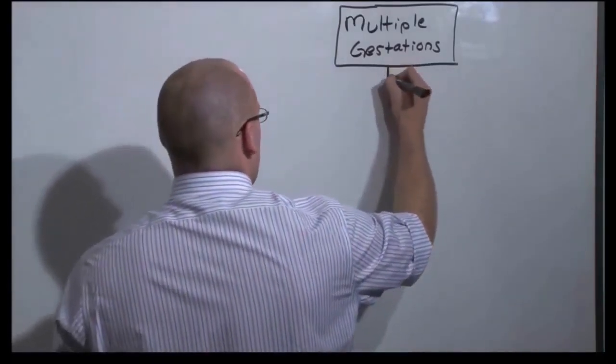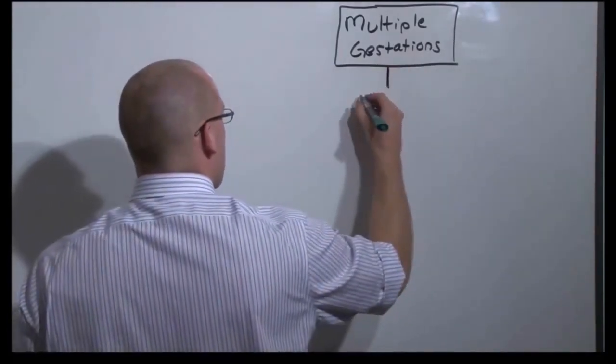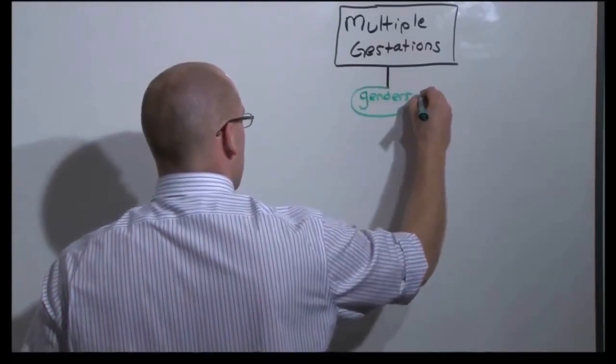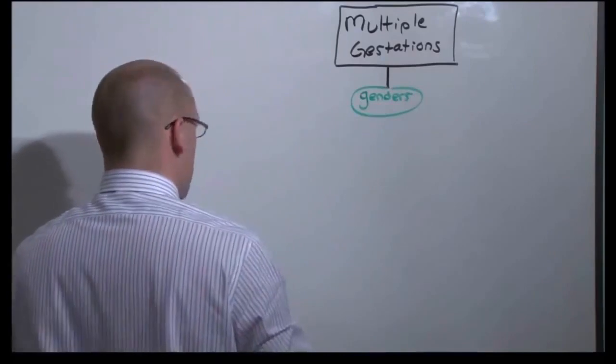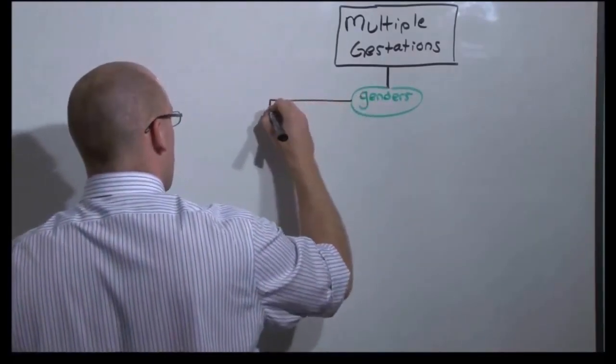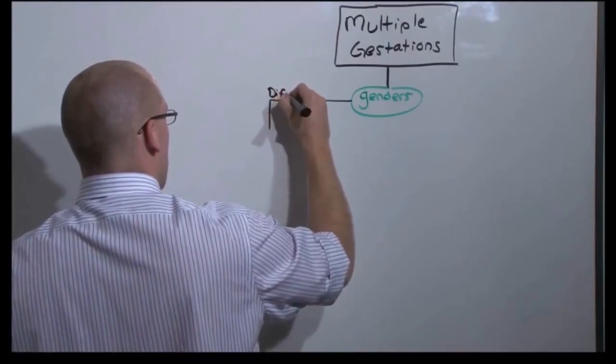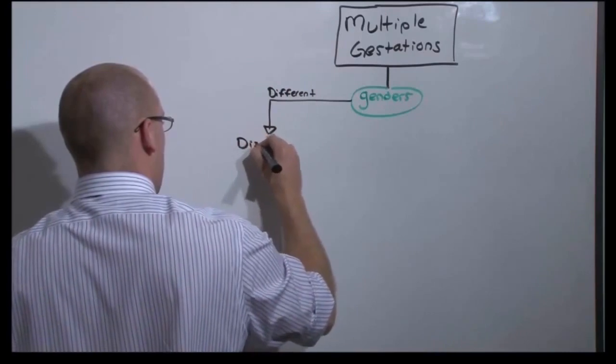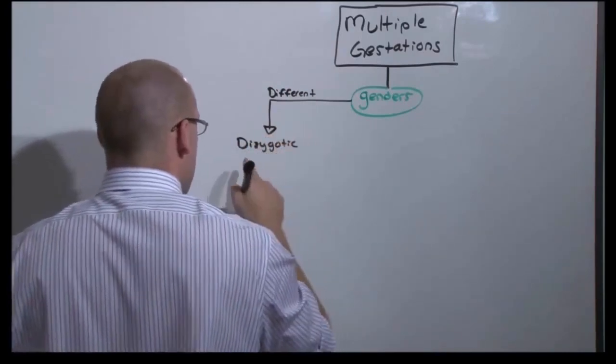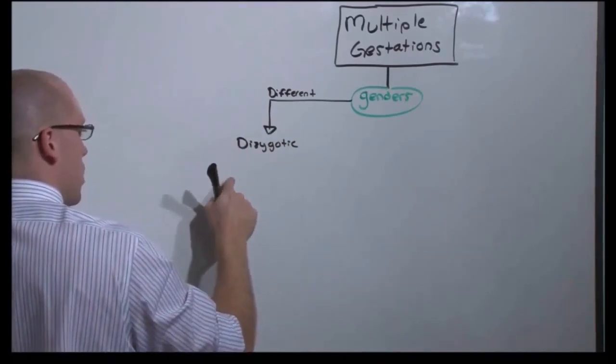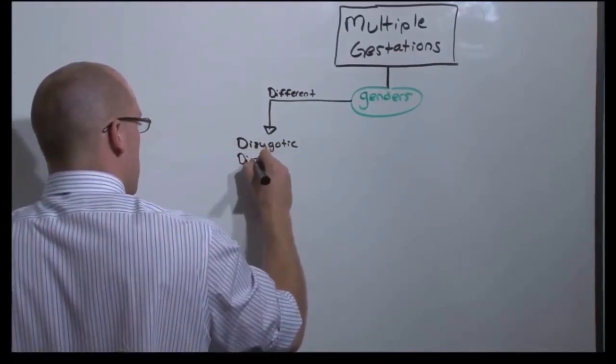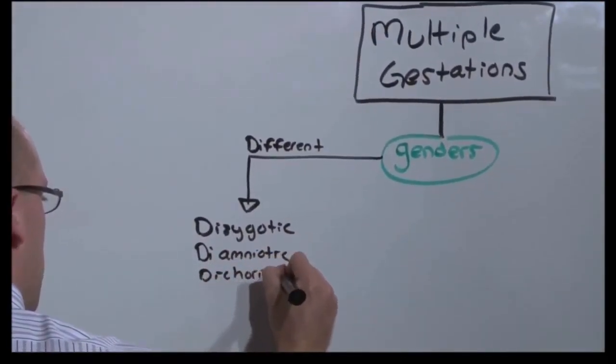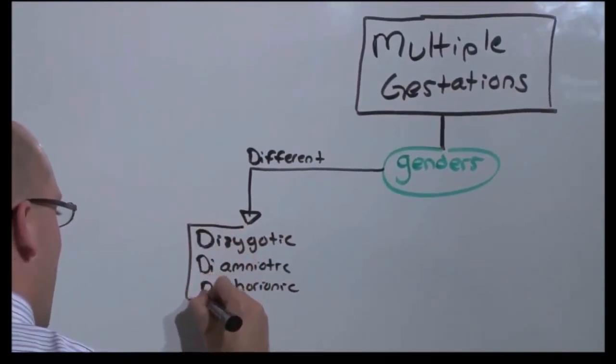The first thing you do is look at the genders. Because if the genders are different, it means that they have different genetic material, which means that they could not have come from the same egg. So if there are different genders, inherently they are dizygotic. And being dizygotic means that they are two separate pregnancies occurring at the same time. So they must be diamniotic and dichorionic. These are non-identical twins.